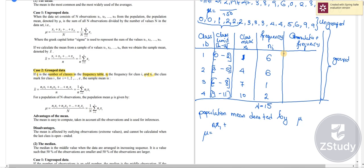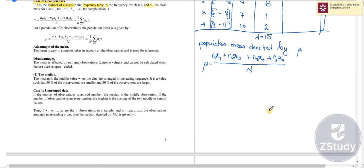plus n₂x₂ plus n₃ multiplied by x₃. Finally, the last class is n₄ multiplied by x₄, all together divided by our population size capital N. And this simply means